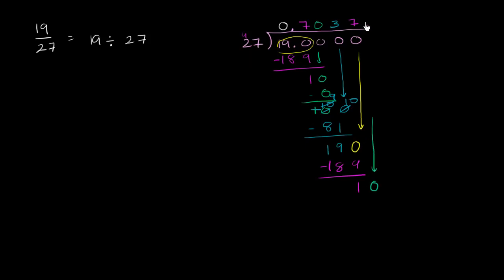We said 27 goes into 10 zero times. 0 times 27 is 0. Subtract. Then you still have the 10, but we've got to bring down another 0. So you have 27 goes into 100. We've already done this, 3 times. So you see something happening here.